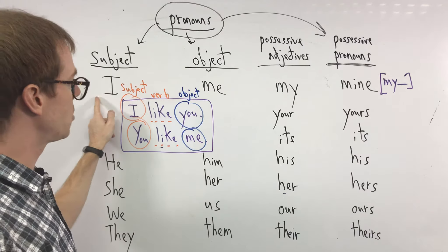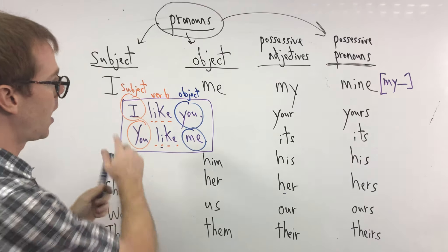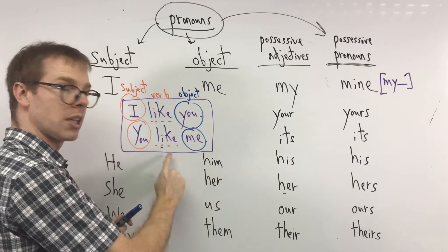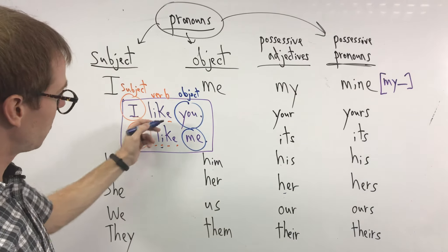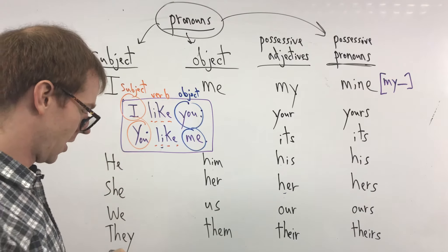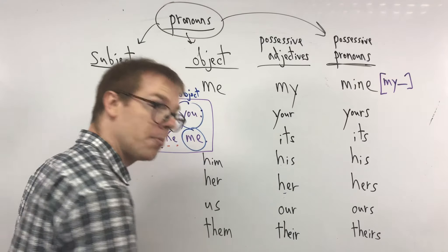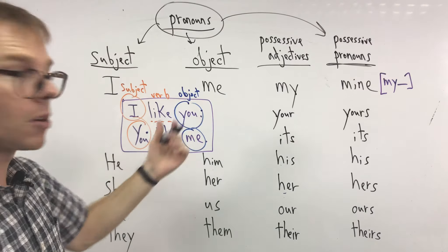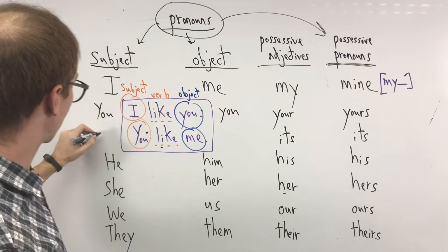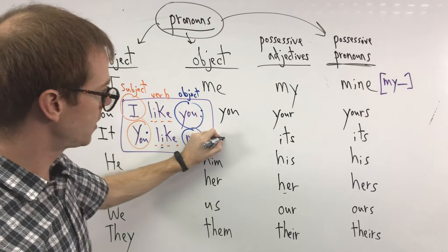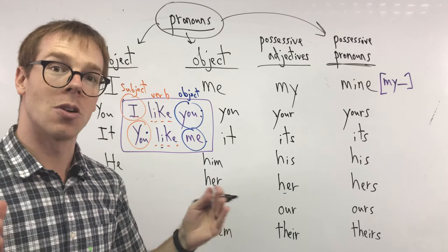So here, I changes to me. I like you, you like me. If you noticed, you is really simple. You doesn't change. So there are some for subject, object that don't change. We could have our you and our you. We can have our it and our it. Easy, no change.